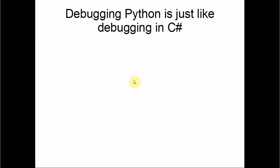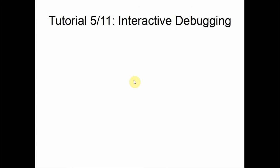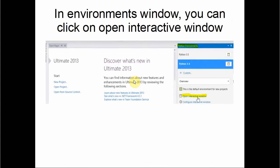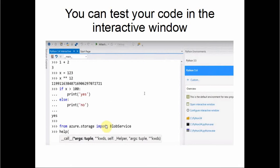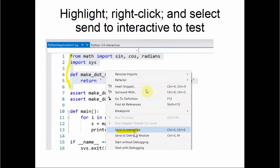Debugging Python in Visual Studio is pretty much the same as debugging in C#. For interactive debugging, in the Environments window you can click on 'Open Interactive Window,' which lets you run code on the fly as you type it. You can test your code in the interactive window, and you can highlight code in your project, right-click, and select 'Send to Interactive' to see how it runs.